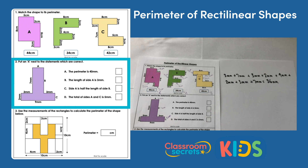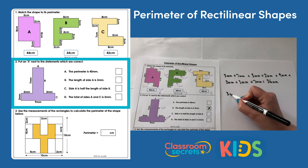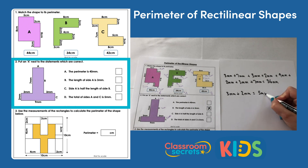Statement B — the length of side a is 3 millimetres: we've already calculated that, so that statement is correct. Statement C — side a is half the length of side b: side a is 3 millimetres and side b is 7 millimetres. Half of 7 is not 3, so that statement is not correct. Statement D — the total of sides a and c is 5 millimetres: side a is 3 millimetres and side c is 2 millimetres, which equals 5 millimetres, so statement D is also correct.